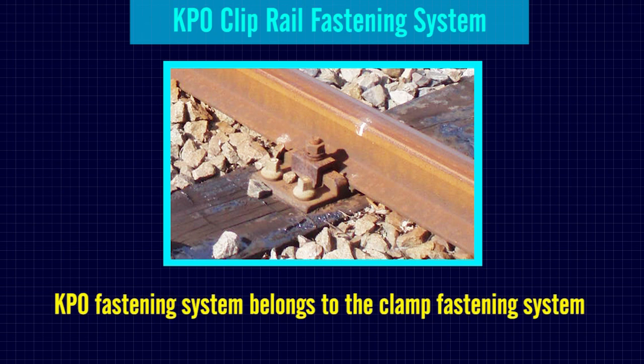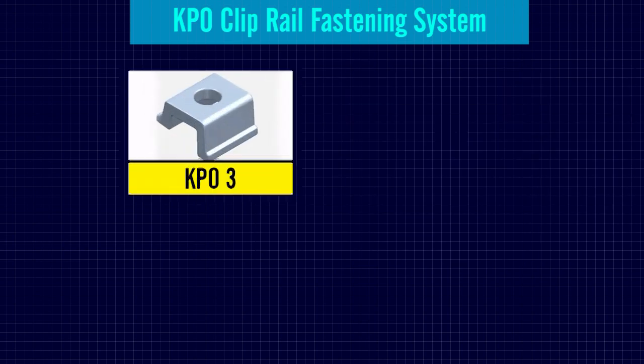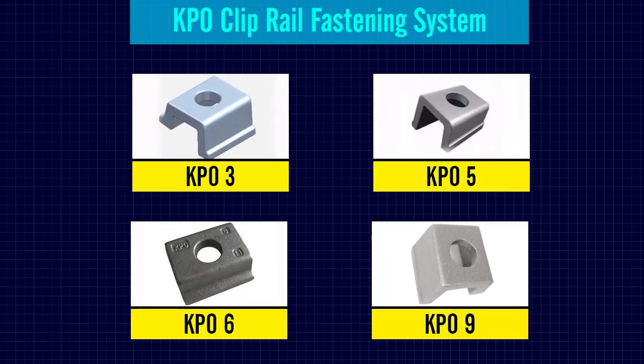KPO fastening system belongs to the clamp fastening system. There are different types of KPO railway fastening system like KPO3, KPO5, KPO6 and KPO9.